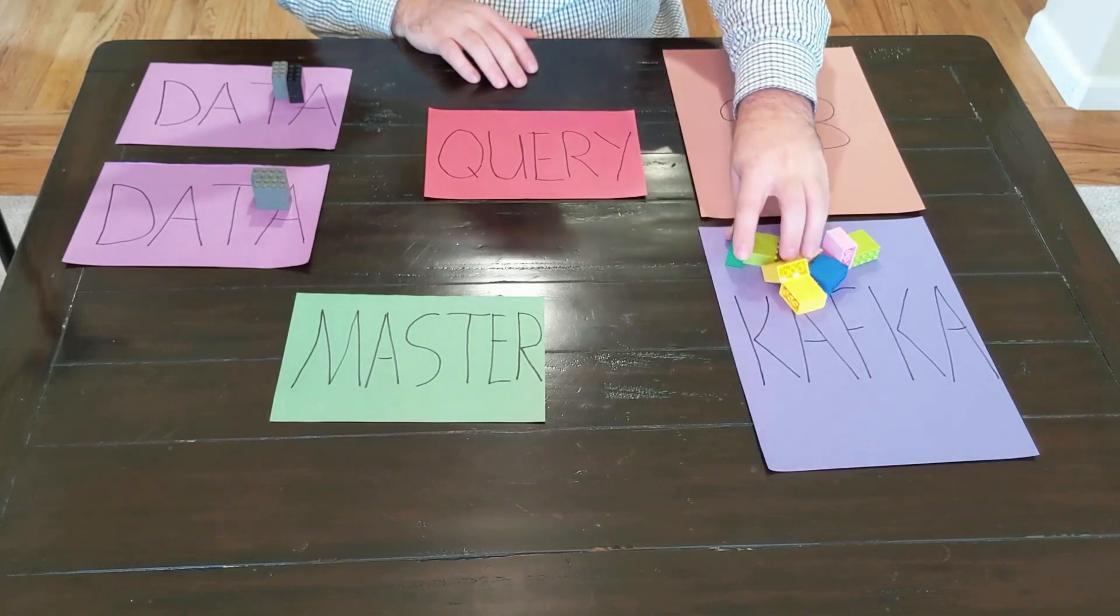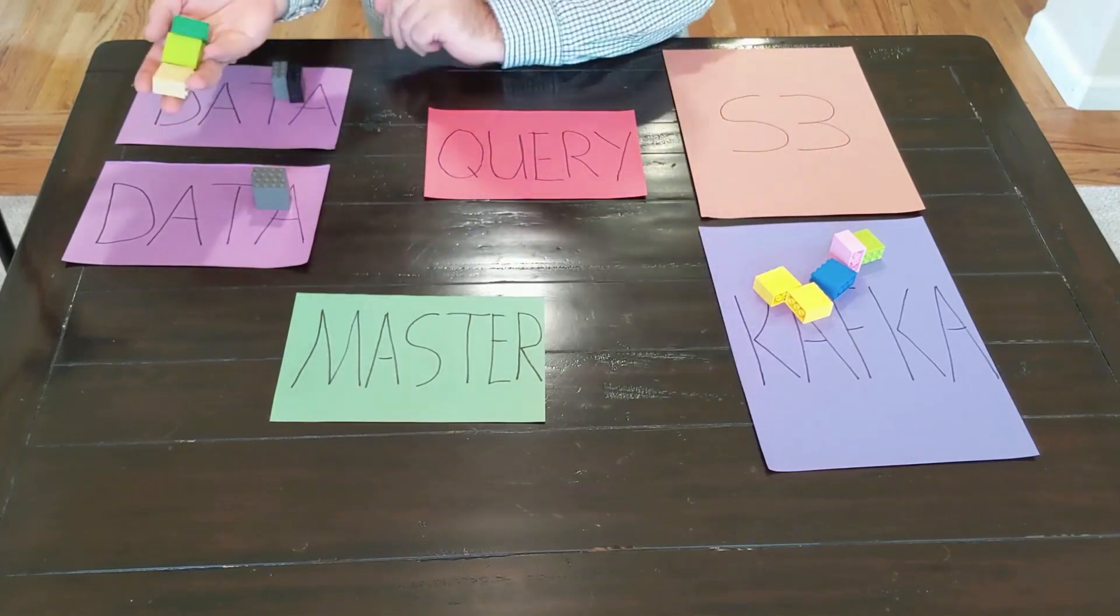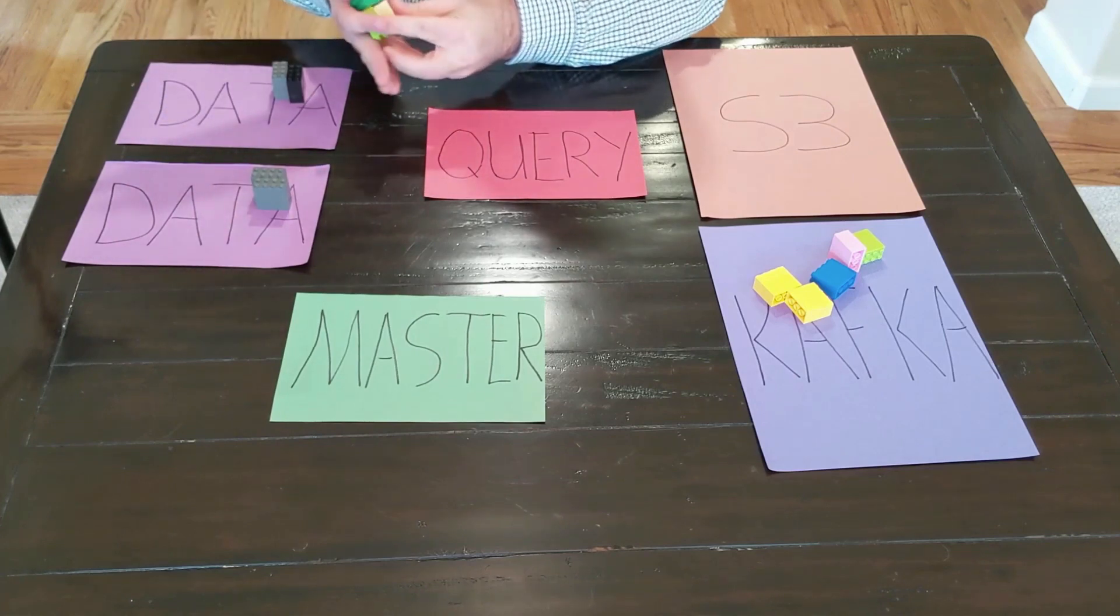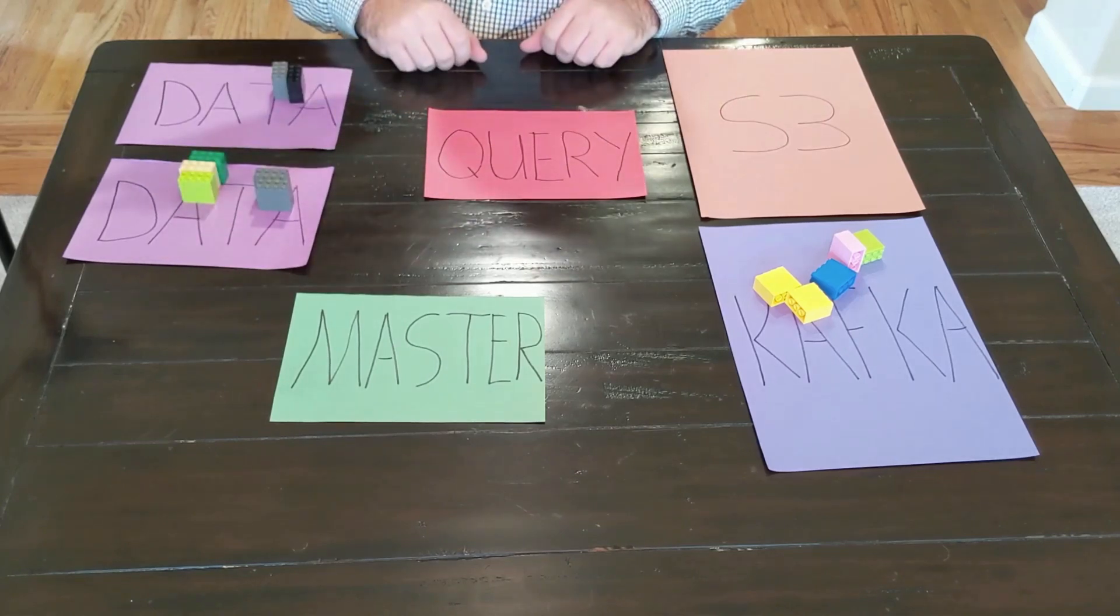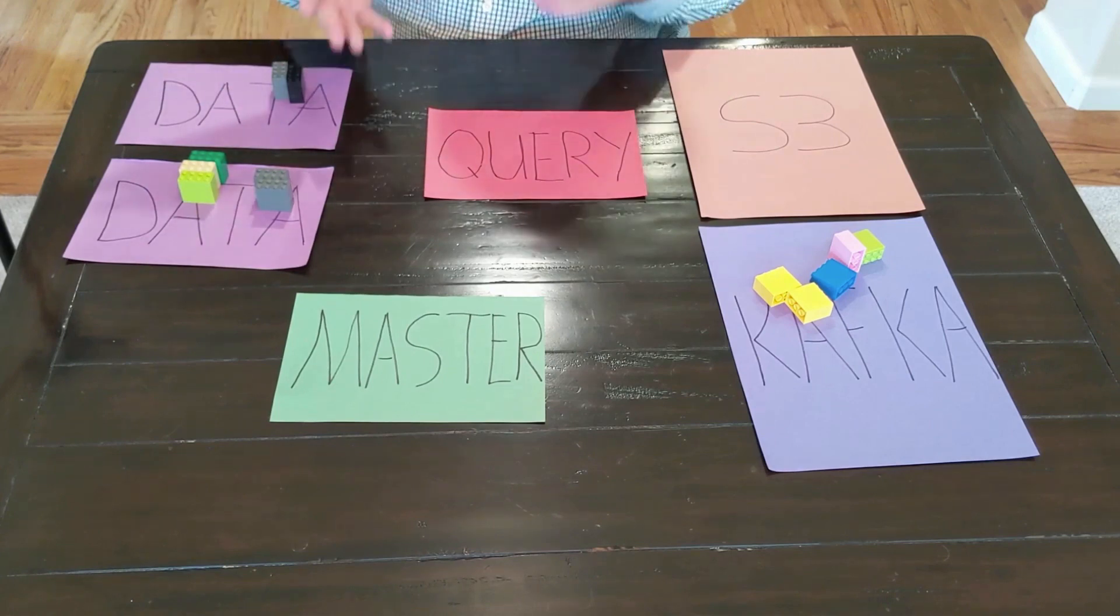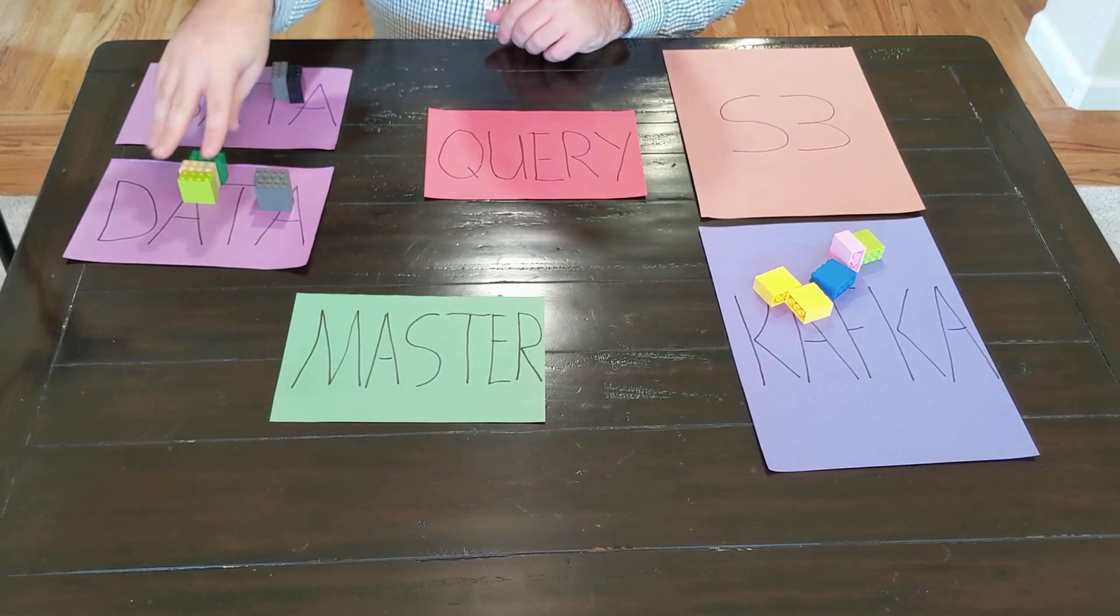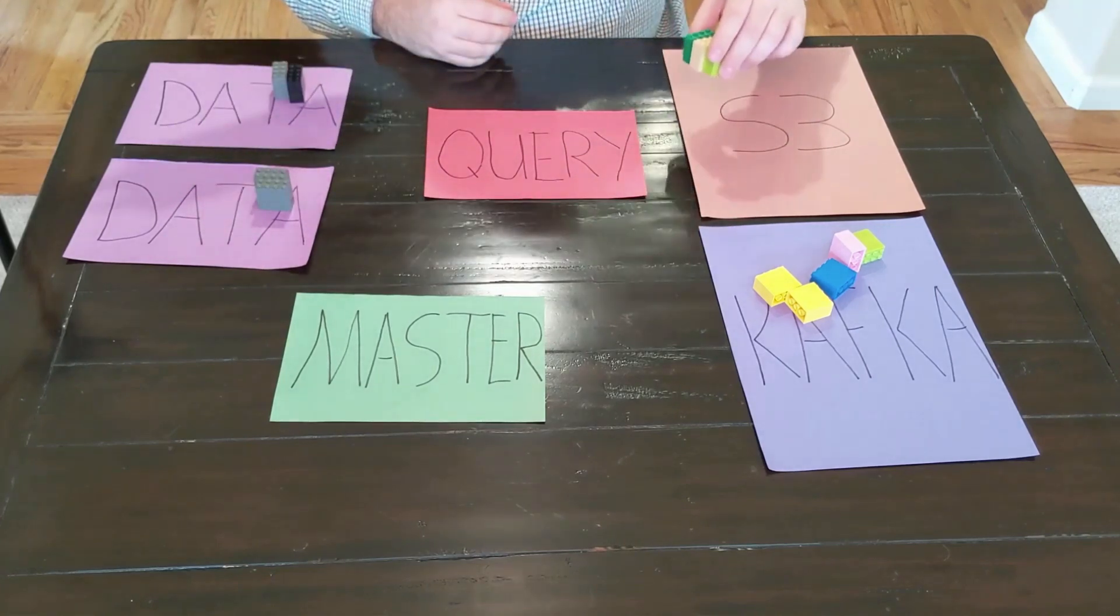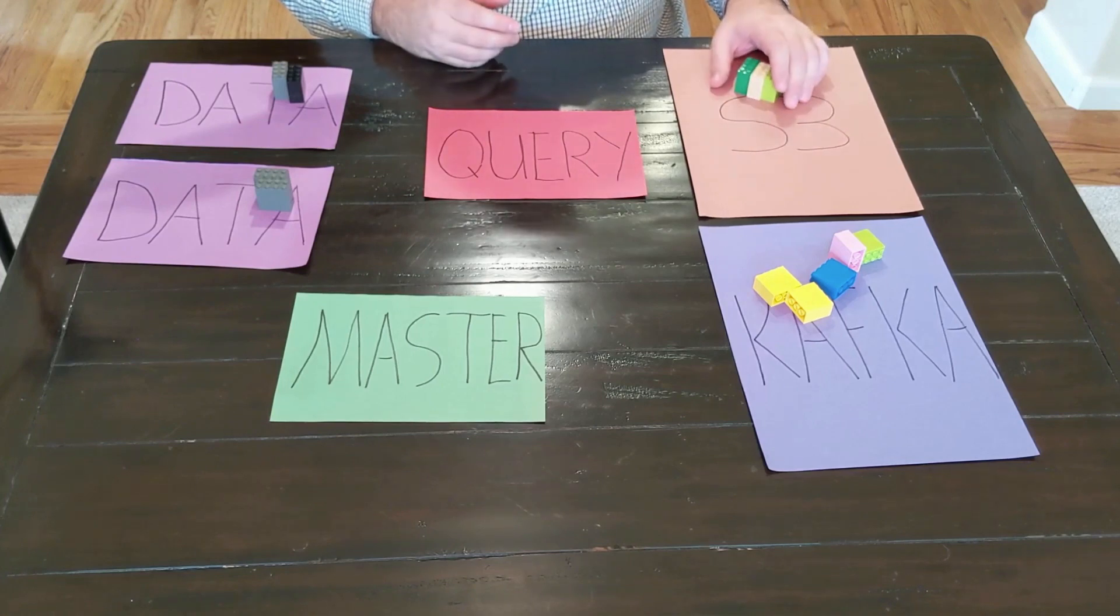Now what we're going to have to do is one of these data servers is going to have to consume this data. And as you'll remember, Druid has its own file format. So it's going to ingest that data, put that data into its own file format. And then once it has been processed, once that data has been processed by that data node, it will, in memory, keep so much of that data, so much of that Kafka data, and then eventually save that out as a segment or a file in our S3 for our durable storage.